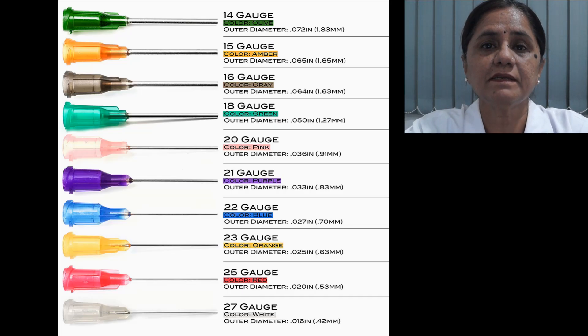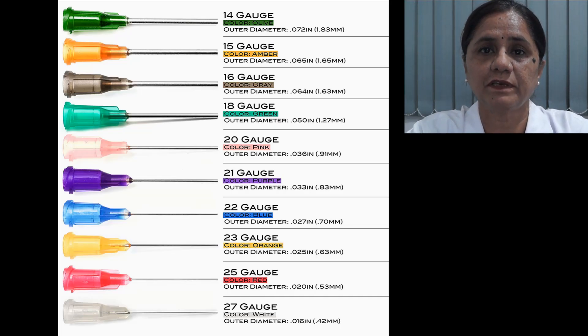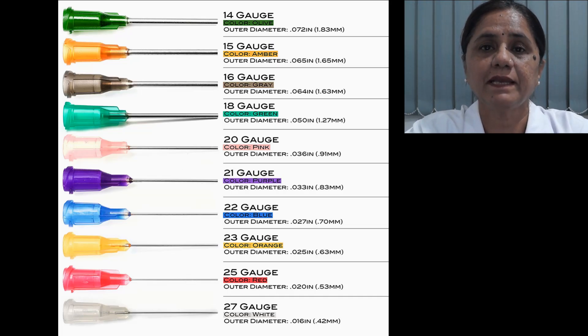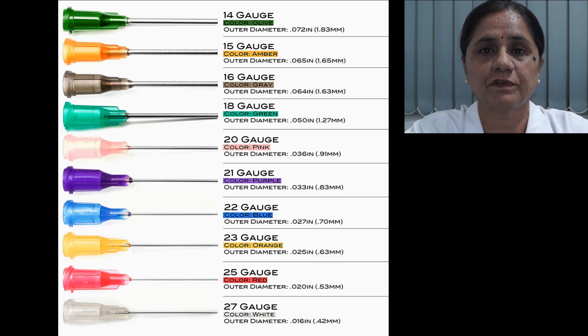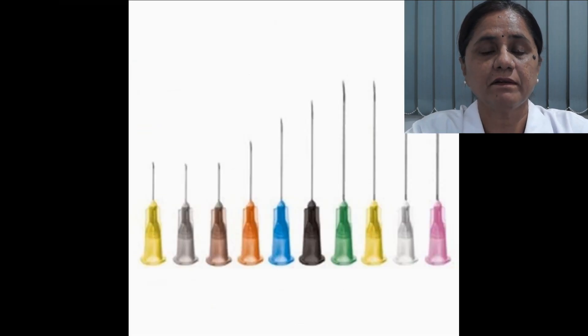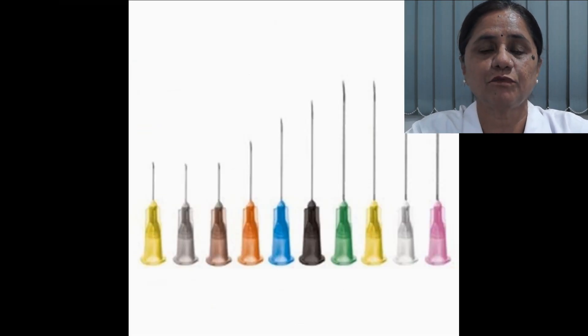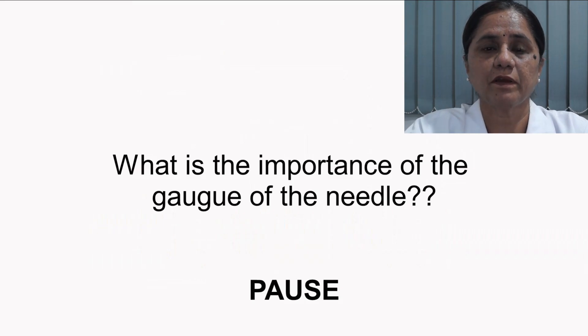The needle is described on the basis of gauge and length. The gauge is the internal diameter of the needle, and the length of the needle is described in inches.